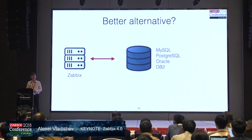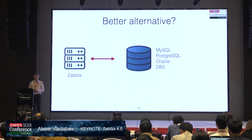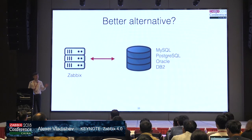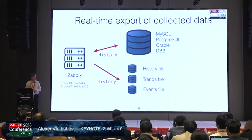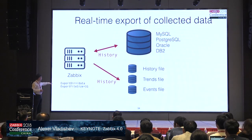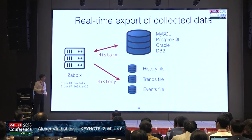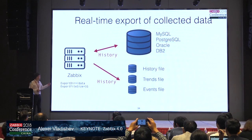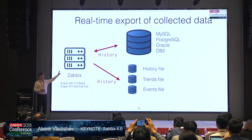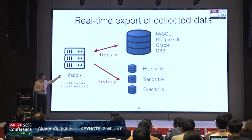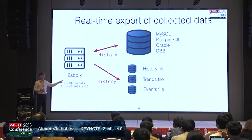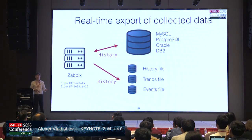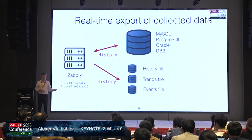In Zabbix 4.0 we also introduced another way to push collected historical data in real time to other systems. Using parameters in the Zabbix server configuration file — export directory and export file size — Zabbix will duplicate all collected historical data to the local file system. It writes history to the standard database and also replicates it to files: a trends file, a history file, and an events file.